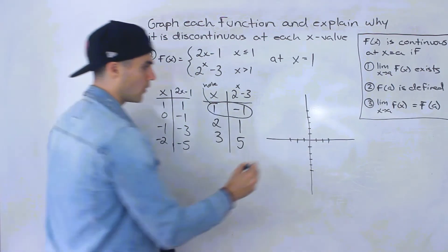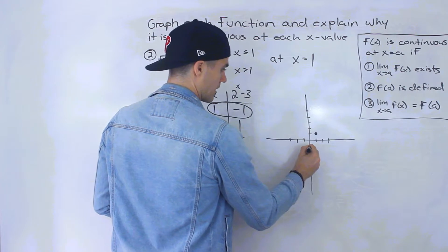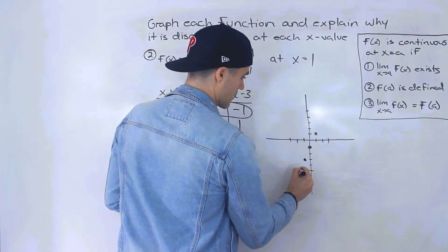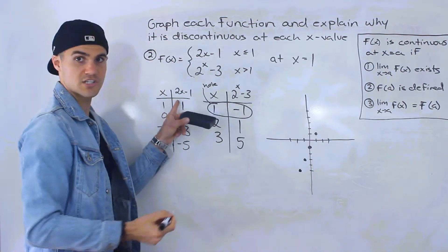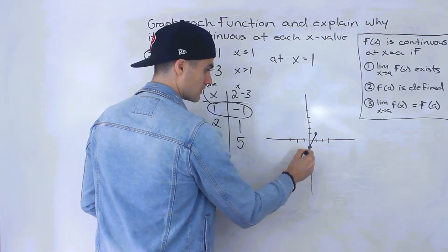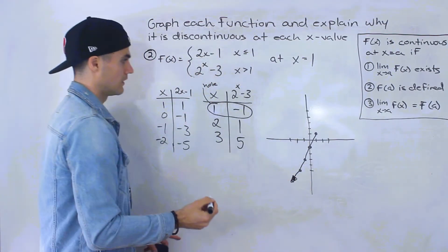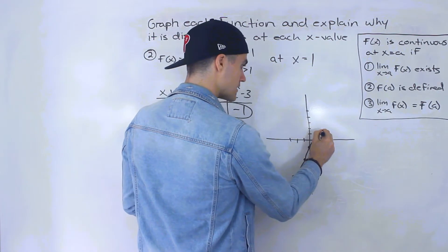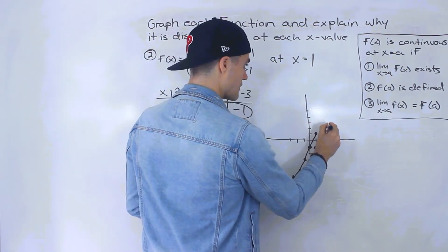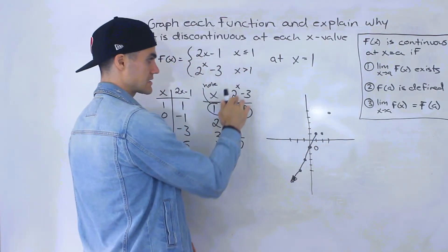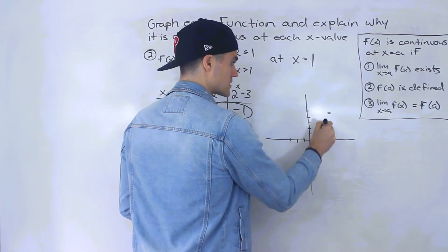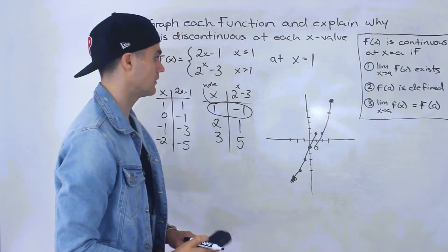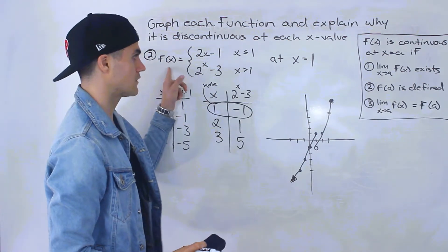Plotting the points: one and one, zero and negative one, negative one and negative three, negative two and negative five — this is just the line two x minus one. For the exponential piece: one and negative one is a hole, two and one, three and five. This is an exponential function, so it keeps rising. That's how the piecewise function looks overall.